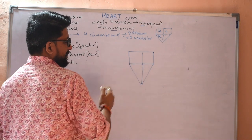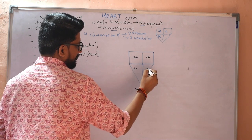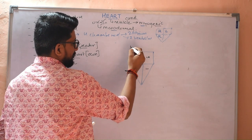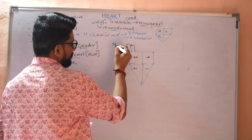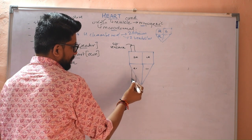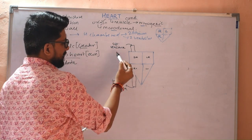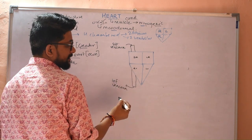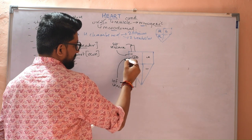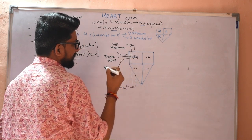Now let us draw and identify the parts: right atrium, left atrium, right ventricle, left ventricle. When we mention the greater blood vessels, the blood vessels coming from the upper side are known as the superior vena cava, and the blood vessels coming from the lower side are the inferior vena cava. Both these blood vessels open inside the right atrium and bring deoxygenated blood into the right atrium.